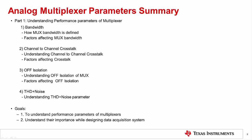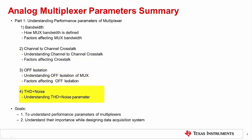In this video, we will discuss multiplexer bandwidth, channel-to-channel crosstalk, off-isolation, and THD plus noise specifications. Specifically, we will see how these parameters are defined and measured. We will also see device-related factors that affect these parameters and limit multiplexer performance.